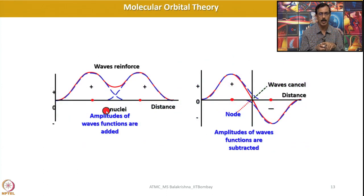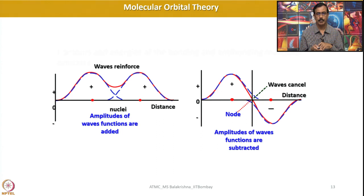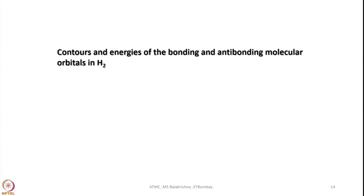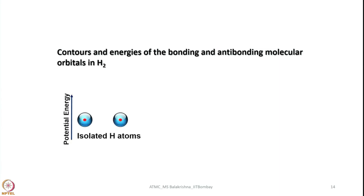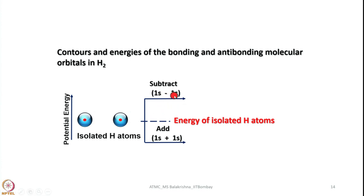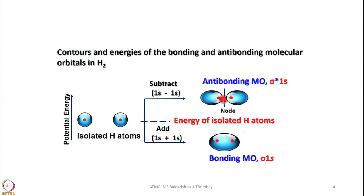This is how you represent summing and subtraction of wave functions. When waves are reinforced, electron density resides between the nuclei — this is bonding. When amplitudes are subtracted, a node appears between the two nuclei — this is antibonding. For H2, considering two isolated hydrogen atoms each with one electron in their 1s orbitals, when they interact two levels are generated: one from addition giving the sigma 1s bonding molecular orbital, and one from subtraction giving the sigma* 1s antibonding molecular orbital where a node is generated. All antibonding orbitals are given the superscript star.